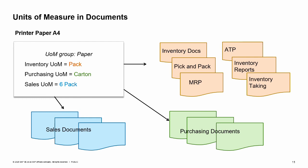You can overwrite the unit of measure and the items per unit in marketing documents as needed. For example, you usually buy from a vendor who delivers an item in cartons — each carton contains 12 units. However, you are trying out a new vendor who will supply the item in crates, where each crate contains 20 units. Since the purchasing unit of measure is carton, the unit of measure in the purchase order defaults to carton. As long as the crate unit of measure belongs to the paper UOM group, you can override carton and change the unit of measure and items per purchase unit to crate in the purchase order without affecting the item master record. If the change is permanent, you can also make the same change to the default purchasing unit of measure in the item master data record. Remember that regardless of which purchasing or sales unit is used in a document, the postings are always made in the inventory unit of measure.